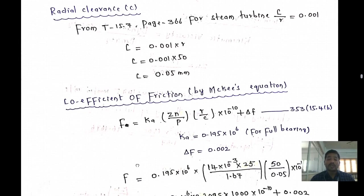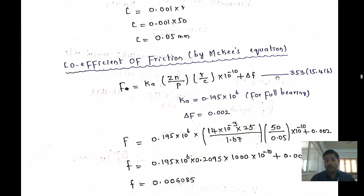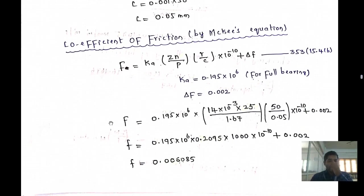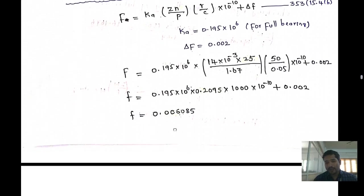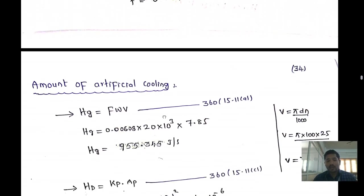We now find the coefficient of friction using the McKee equation (page 353, equation 15.4b). With k = 0.195 × 10⁶, Z = 14 × 10⁻³ N·s/m², N = 25 rps, P = 1.67, r/c = 50/0.05, and Δf = 0.02 for a full bearing, the coefficient of friction μ = 0.006085.